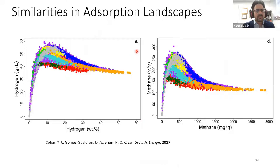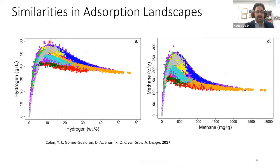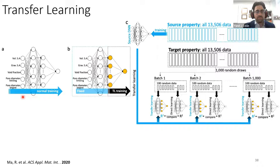I'm going to give you two examples: transfer learning and active learning. The inspiration for transfer learning was this: plotting hydrogen adsorption (volumetric vs. gravimetric) and methane adsorption (volumetric vs. gravimetric) — the similarities between these are quite striking. Both show a very sharp rise, a kind of maximum, and then a trend toward the empty tank limit. That inspired the question: can I use this data to make predictions about that data using a very limited number of points?